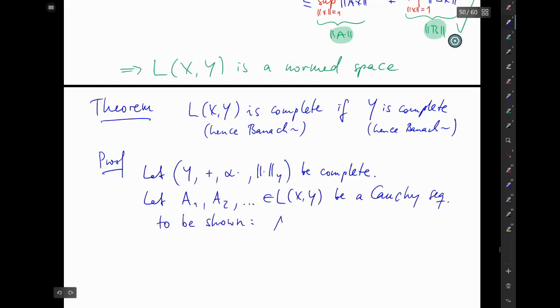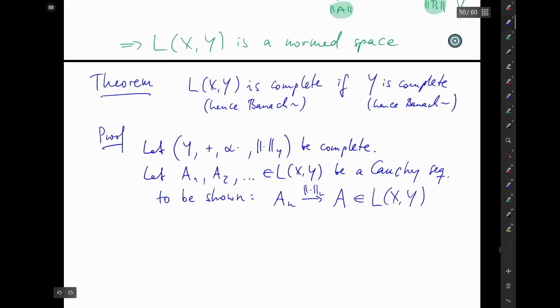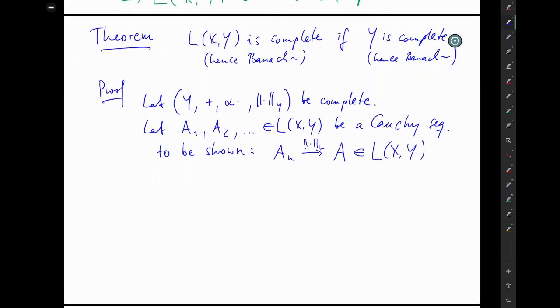We have to show that our Cauchy sequence converges in the norm of L(X,Y) to an operator A that is again in L(X,Y). That's the job. So this is where we have to spell it out what it means for the sequence to be a Cauchy sequence in L(X,Y).